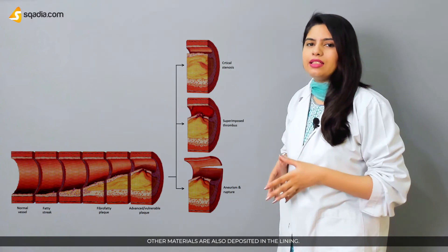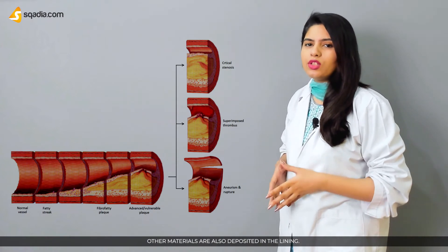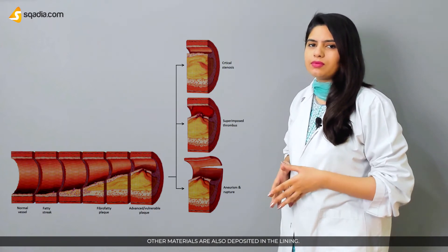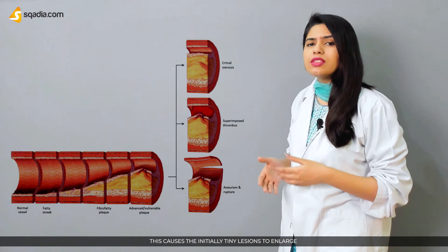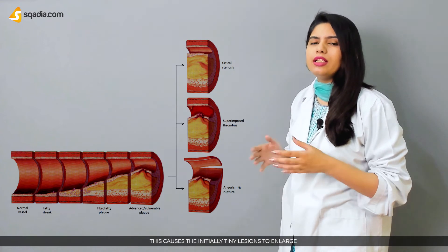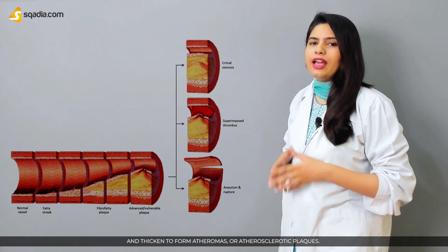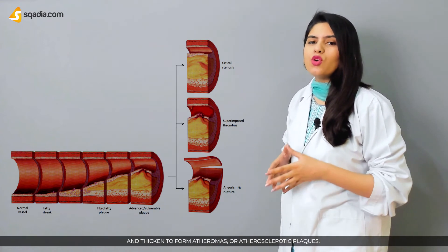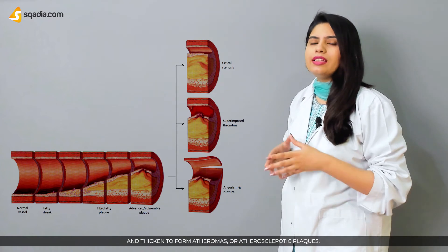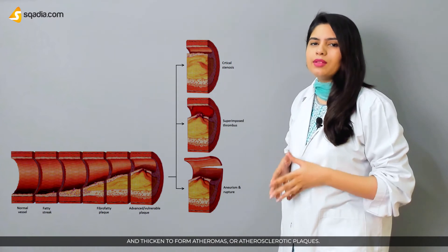Other materials are also deposited in the lining. This causes the initially tiny lesions to enlarge and thicken to form atheroma, or atherosclerotic plaques.